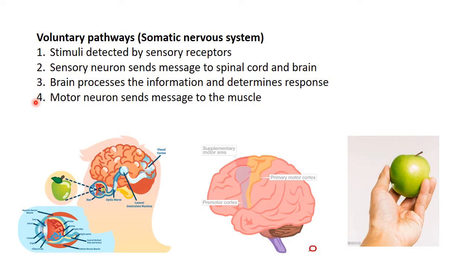There are four steps. First, we detect a stimulus, and that's detected by sensory receptors. Our sensory receptors could be touch, taste, sight — all those different types of sensory receptors.